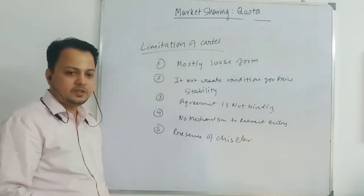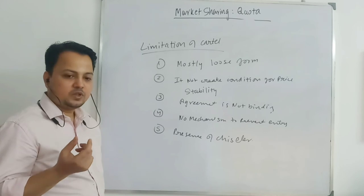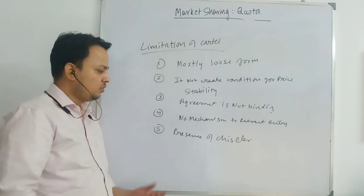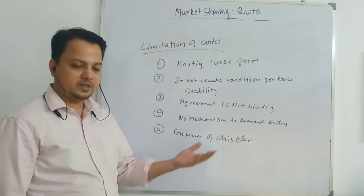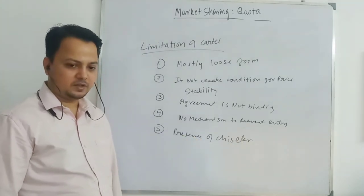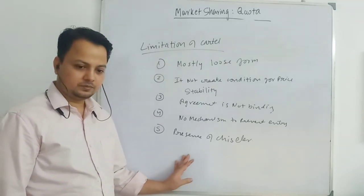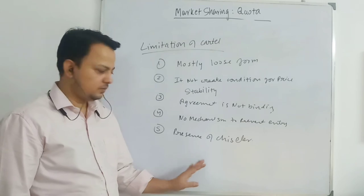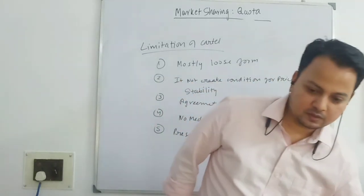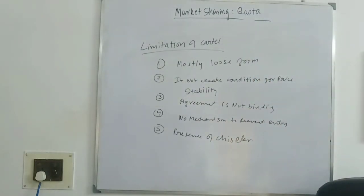When you have presence of a cheater, price and output stability will not be there because one firm may be cheating, and in this phase there will be instability in price and output. So here we finish the cartel section. In the next section I am going to do price leadership and output.